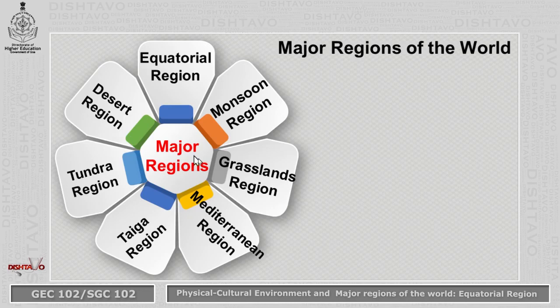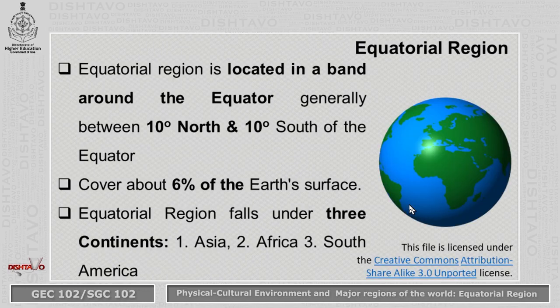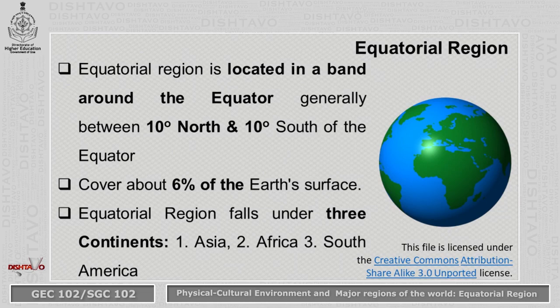From this module's point of view, today we will be discussing about the equatorial region. The equatorial region is located in a band around the equator, generally between 10 degrees north and 10 degrees south of the equator — that is, 10 degrees above and 10 degrees below the equator.